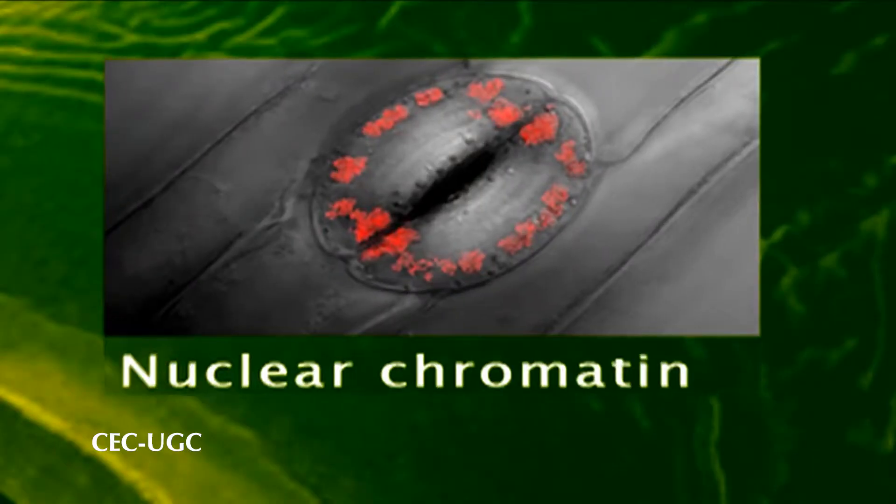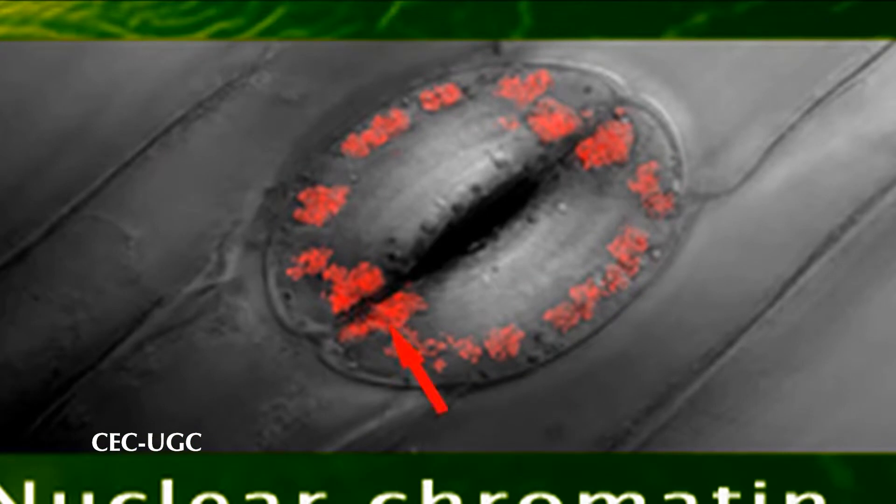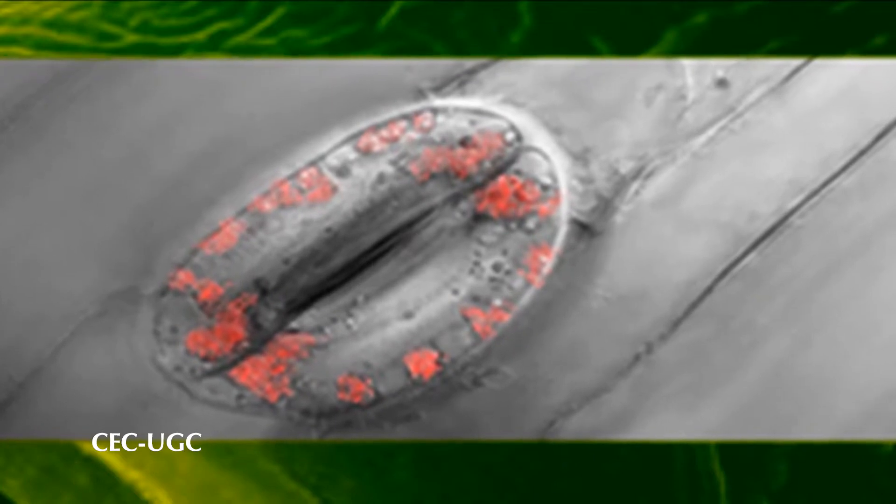Also in guard cells of open stomata, nuclei can possess a reticular condensed chromatin, and in those of closed stomata a homogeneous chromatin. These ultrastructural features are associated with the higher synthetic protein and RNA activities of the guard cells when stomata are closed.